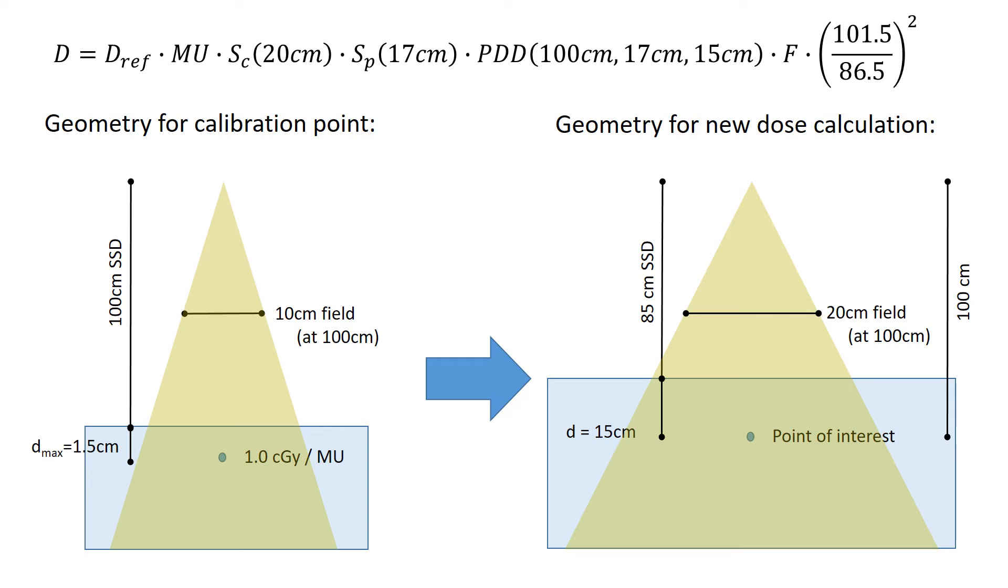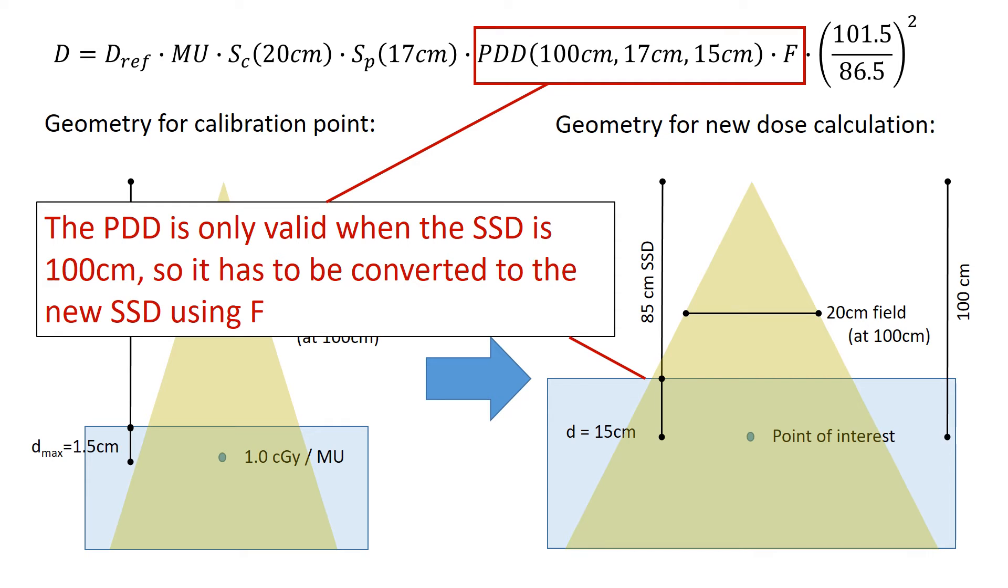Now let's look a little closer at the PDD. So our PDD is only valid for a source-to-surface distance of 100 cm. And so we actually have to convert the PDD that we have to be valid for another source-to-surface distance. And we do that using a factor called f, and that's this other factor that's here next to the PDD. So we can look up our PDD, but it's not really valid until we apply f for any SSD other than 100 cm.